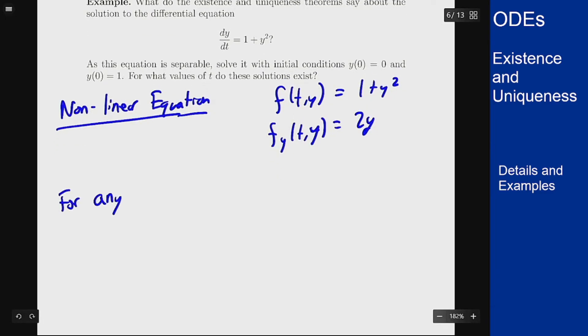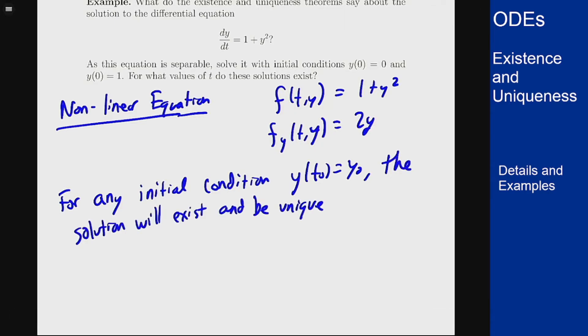So for any initial condition y(t0) = y0, the solution will exist and be unique on some interval around t0. Note what I did not say there. What I did not say is that because these functions are continuous everywhere, our solution will always exist everywhere. Those are not the same thing.